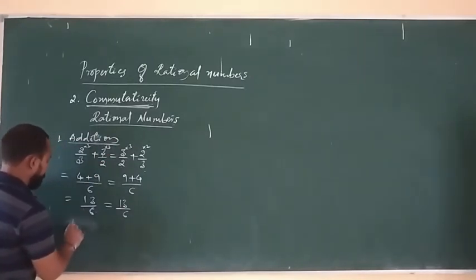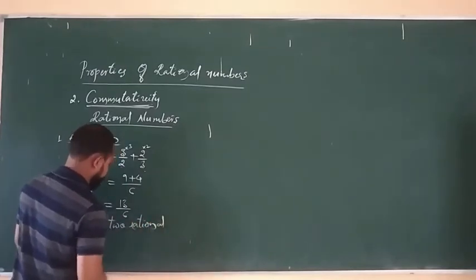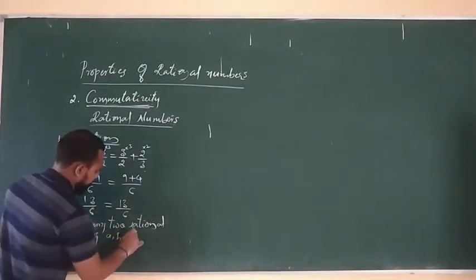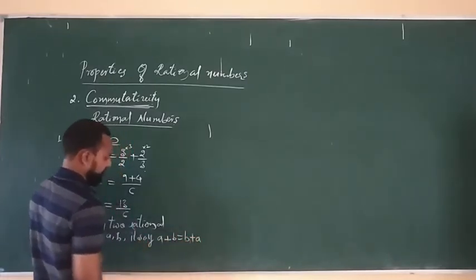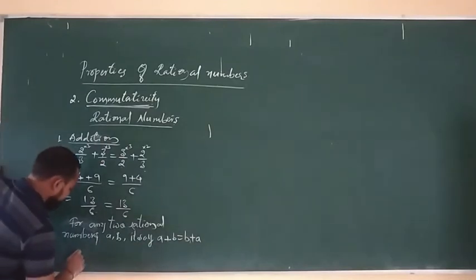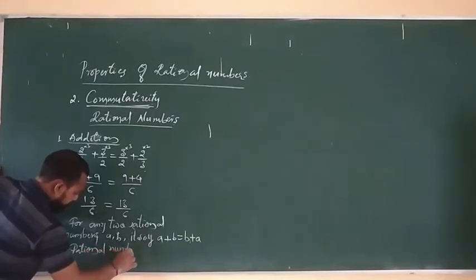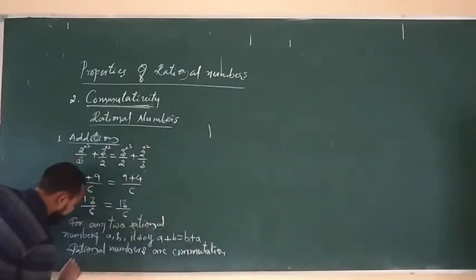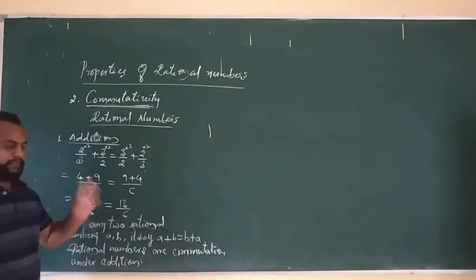In general, for any two rational numbers A and B, A plus B equals B plus A. The rational numbers are commutative under addition.